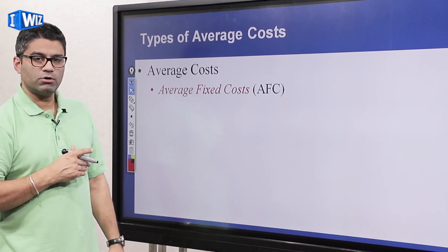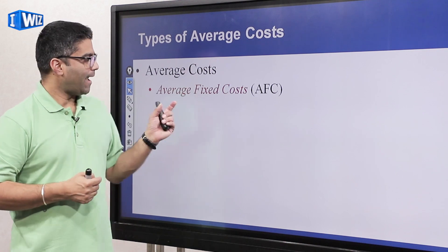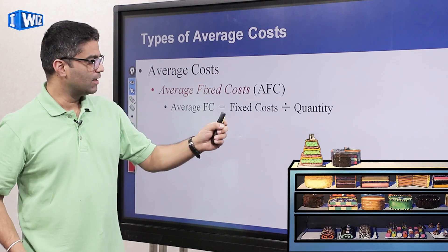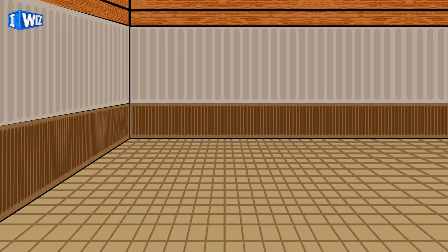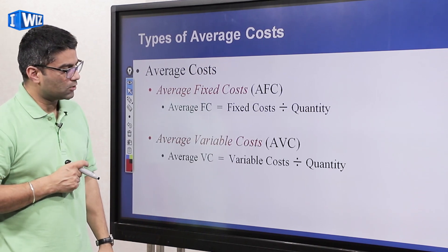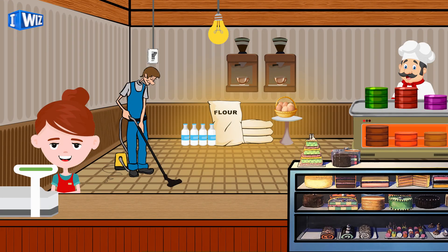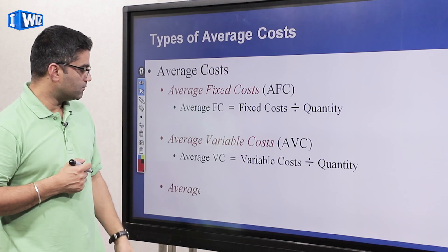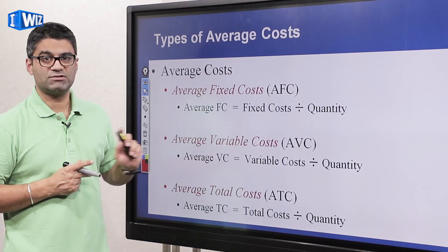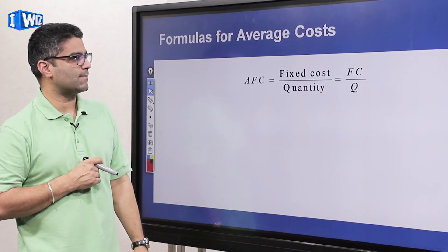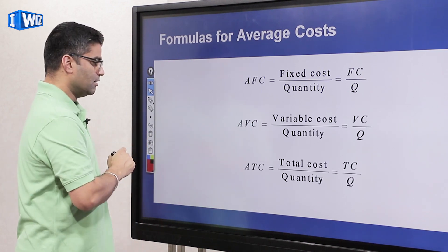Average cost: we know there are two kinds of costs — fixed and variable — and therefore total. Average fixed cost is fixed cost divided by quantity, where quantity refers to the total amount Sidhu's producing in our bakery. Remember what fixed costs were — the rent he pays on the building is a fixed cost. Average variable cost is variable cost divided by quantity — his ingredients like flour or eggs, and the number of people he hires, are all variable costs. Average total cost is AFC plus AVC.